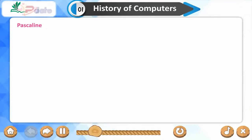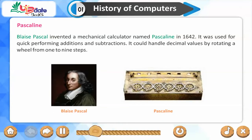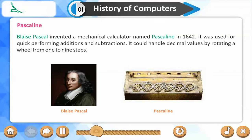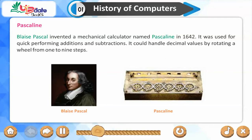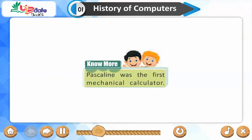Pascaline. Blaise Pascal invented a mechanical calculator named Pascaline in 1642. It was used for quick-performing additions and subtractions. It could handle decimal values by rotating a wheel from 1 to 9 steps. Pascaline was the first mechanical calculator.